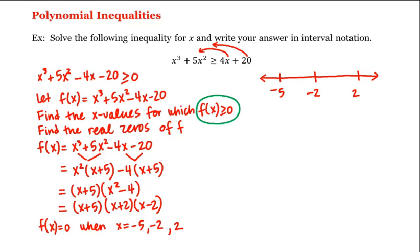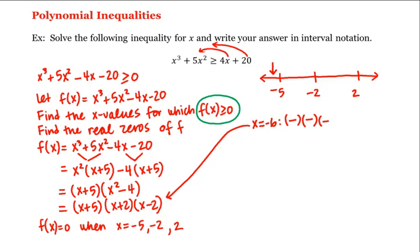In this first interval we choose x equal to negative 6. Plugging negative 6 into the factored form of f, we have negative 6 plus 5, which is a negative number, times negative 6 plus 2, which is also a negative number, times negative 6 minus 2, which is also a negative number. Negative times negative times negative is negative, which means f is negative in this first interval.